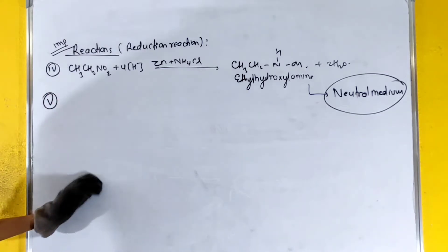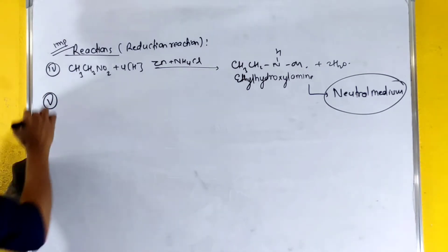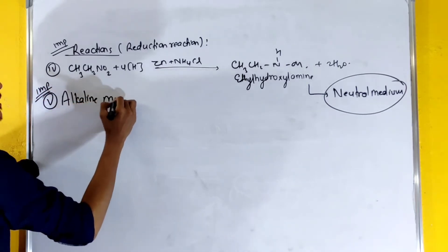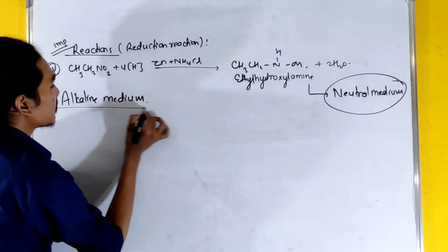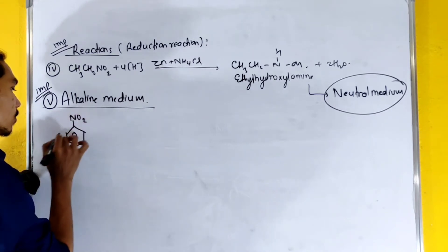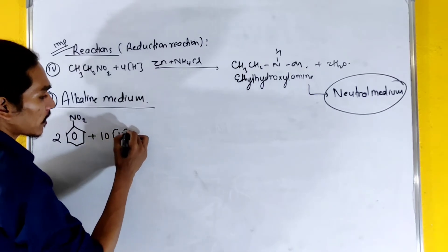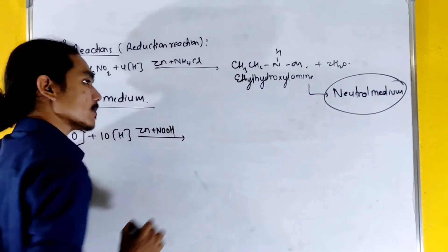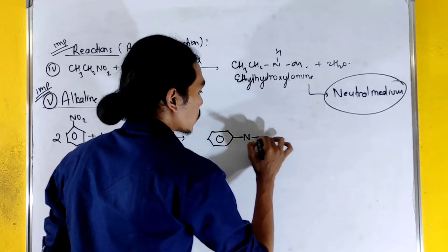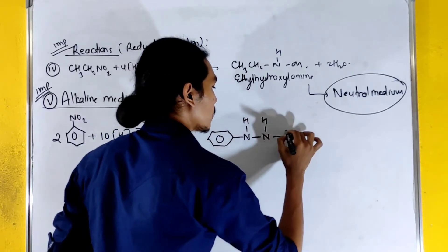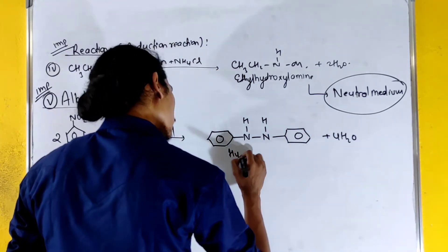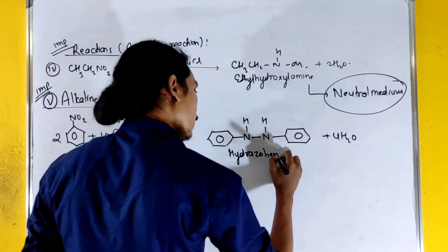Now we are going to talk about alkaline medium, which is very important. In alkaline medium, two molecules of nitrobenzene react with 4H plus NaOH. This gives a compound involving the nitro groups and nitrogen-hydrogen bonds — resulting in Nitroazobenzene formation.